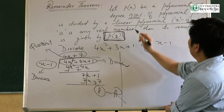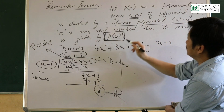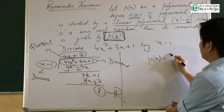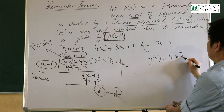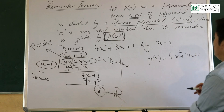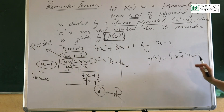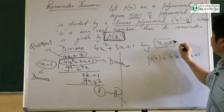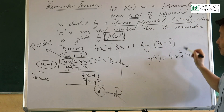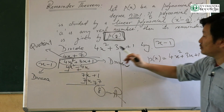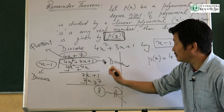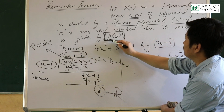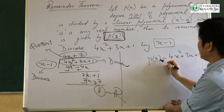Let p of x be a polynomial. If you divide it by x minus 1, you can carry out a long division process to find the remainder.